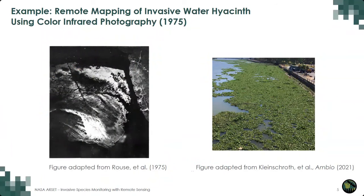Remote sensing of invasive plants is not new — in fact, it is a few decades old. One of the first studies that used remote sensing technology to map invasive plants was done in 1975, where researchers used airborne color photography and color infrared photography to detect water hyacinth, an aquatic invasive plant. Since 1975, there has been a lot of progress on remote sensing technology and the methods we use to map invasive plants, and now remote sensing of invasive plants is becoming more and more common.